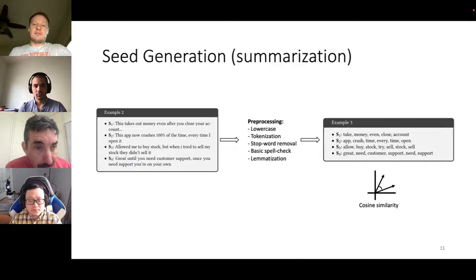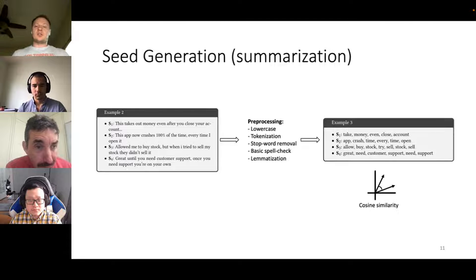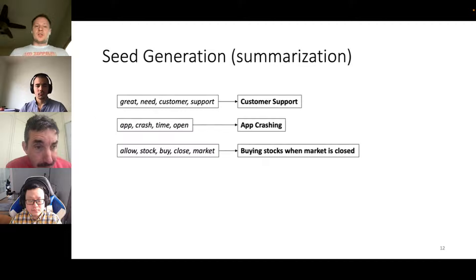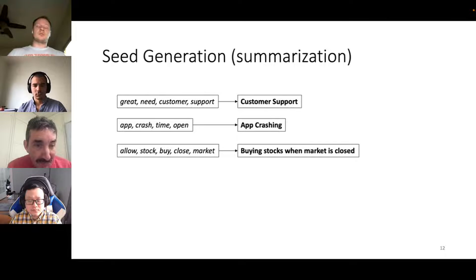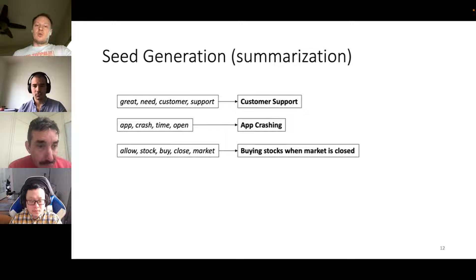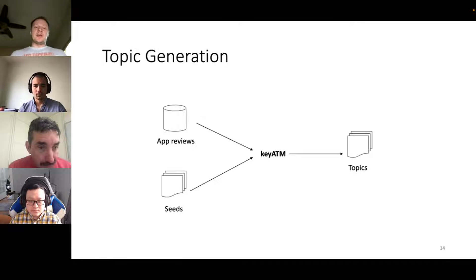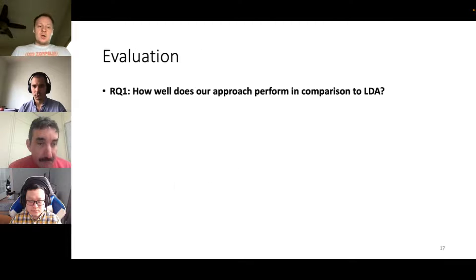In the second step, we generate keywords using hybrid TF-IDF summarization, after typical preprocessing steps like lowercasing and tokenization. The generated summaries already form separate topics — for example, words like 'great', 'neat', 'customer support' suggest a customer support topic, while 'app crash', 'time', 'open' suggests a crashing problem. We then supply these keyword sets to KeyATM along with app reviews to generate topics as output.